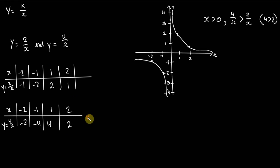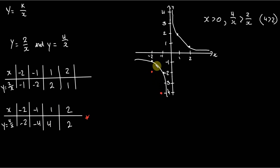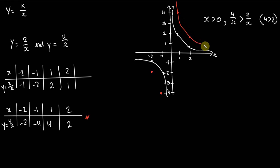I'll plot this in red. When x is negative 2, y is negative 2 - so negative 2, negative 2. You can already see that in this case it's below. When x is negative 1, y is negative 4. And in the first quadrant, when x is 1, y is 4 - you can see it's situated on top. And when x is 2, y is 2. Knowing how this function behaves generally, we know it's going to look something like that in both quadrants.